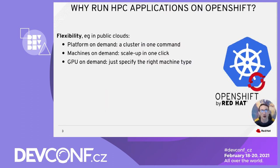Let me introduce why we want to run HPC applications on OpenShift. One aspect I like to highlight is the flexibility of Kubernetes, in particular with public clouds. With one simple command, you can deploy a full cluster on AWS or Google Cloud. And then with one click, you can get new machines to join the cluster — and depending on the machine type you specify, you can get a powerful GPU, a many-core CPU, a lot of memory, or a cheap CPU, depending on your requirements.